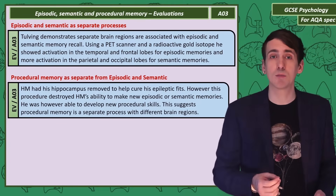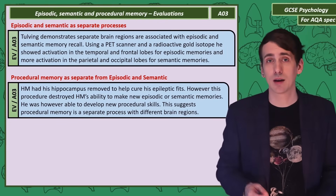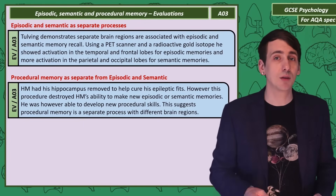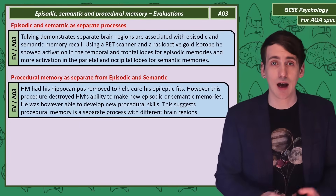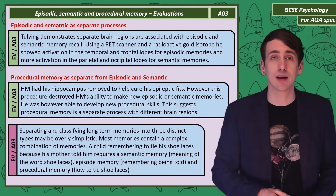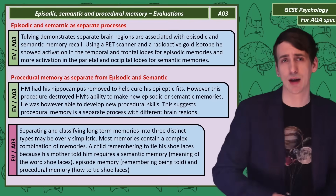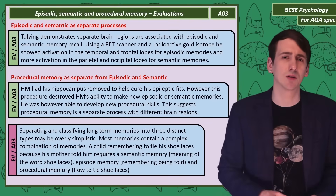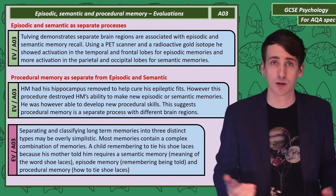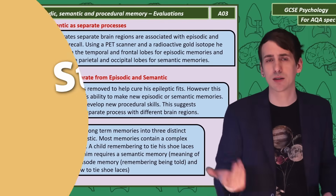If we look at procedural memory, the case study of HM shows us it's separate from episodic and semantic memory. HM had his hippocampus removed to stop epileptic seizures. He lost the ability to make new episodic and semantic memories after the surgery, but not procedural. A final and critical evaluation is it might be a little simplistic to classify long-term memories as just one type. Often memories are complex combinations — a child remembering to tie his shoelaces because his mother told him so needs semantic memory for the word shoelaces, episodic memory to remember that he's been told, and procedural memory for how to actually tie them.